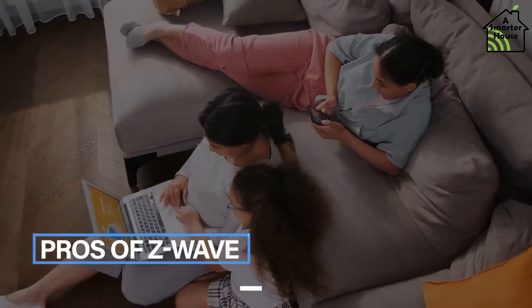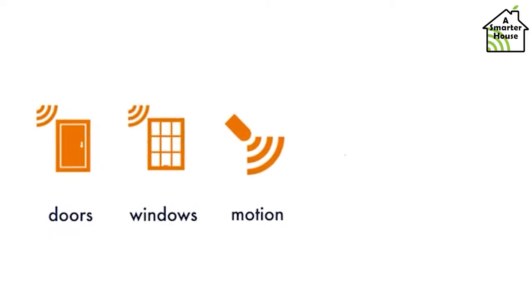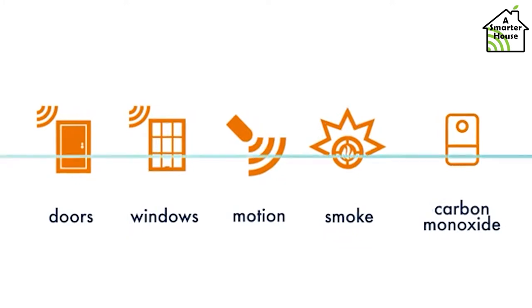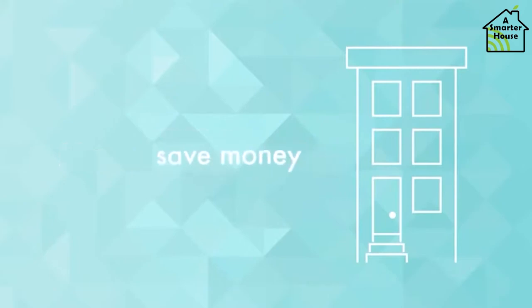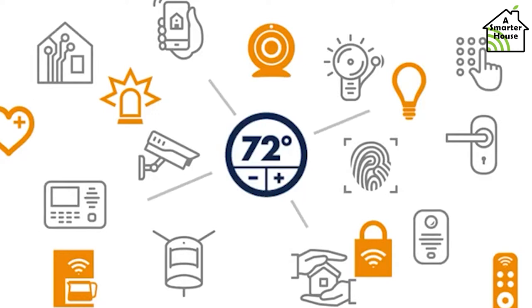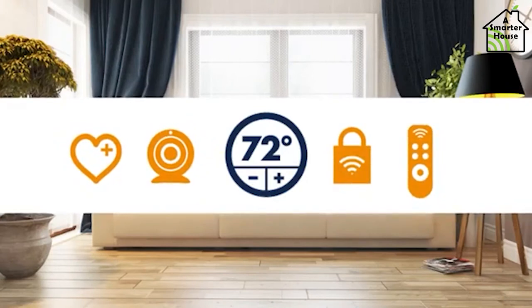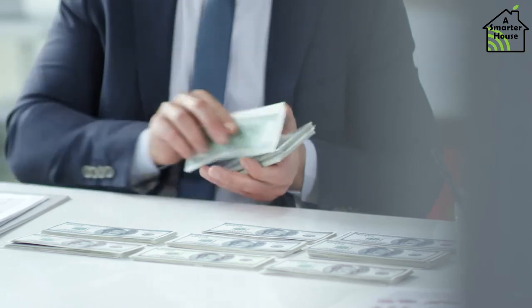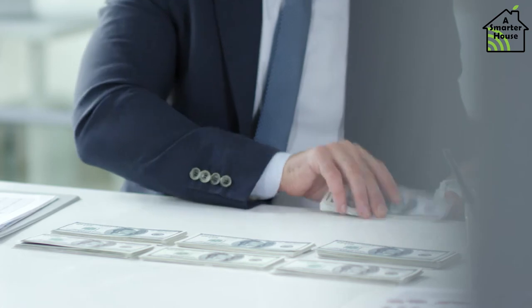Pros of Z-Wave: The construction of a Z-Wave network is simple and straightforward. It is also simple to add and remove Z-Wave devices from the system once it has been installed. Z-Wave devices utilize less power, resulting in significant cost savings and battery consumption. The household appliances are operated remotely, which provides consumers with a great deal of convenience. Z-Wave devices are interoperable with other wireless IoT devices, and because Z-Wave technology-based devices are less expensive, the technology can be used to obtain great features in facilities once deployed.